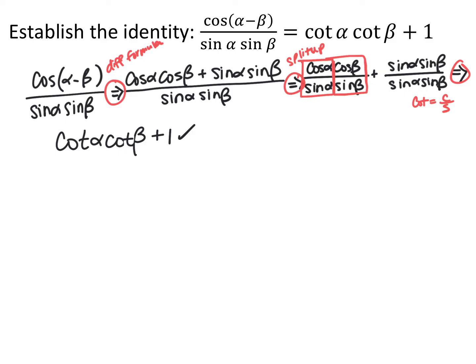In summary, for sum and difference formulas: sine uses the same sign but opposite trig function, while cosine uses the same trig function with the opposite sign.